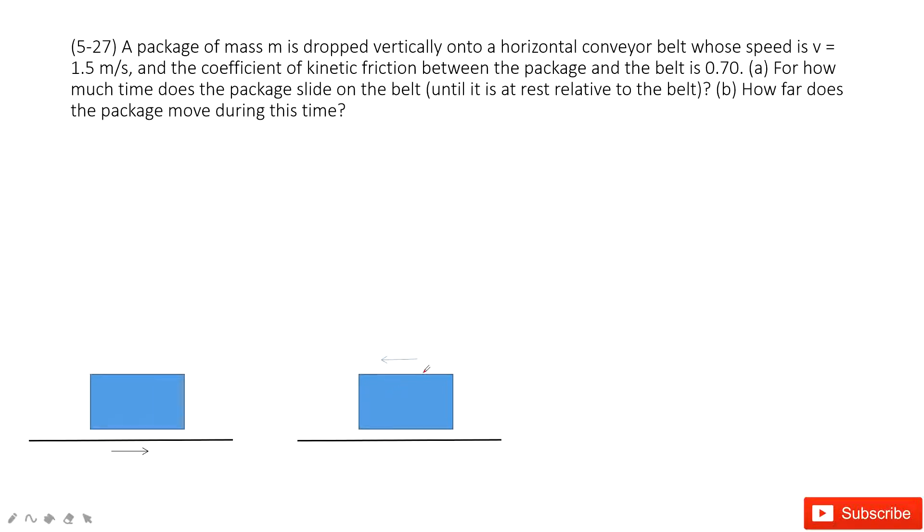Now, the initial velocity for this package is given, 1.5 meters per second. And then we know the friction. You need to find the time taken for this motion. So it looks like you know the initial velocity, and then the acceleration is given, so you need to find the time taken. You need to know the acceleration.